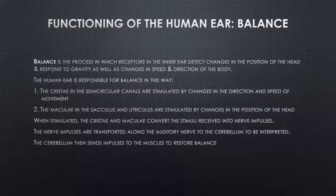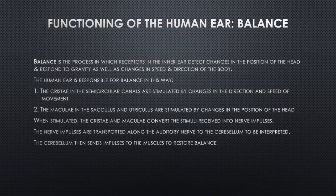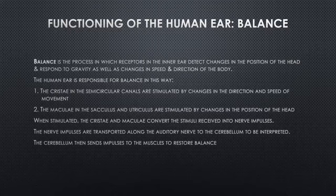Now let us look at balance. Balance is the process in which receptors in the ear detect any changes in the position of your head and respond to gravity as well as changes in speed and direction of your body. There are two important structures for balance: the cristae, found within the semi-circular canals, and the maculae, found within the saccule and utricle.